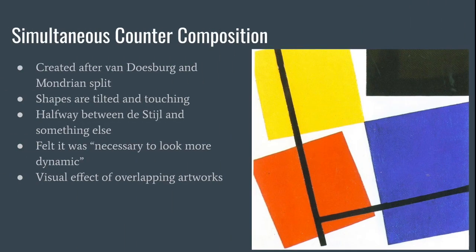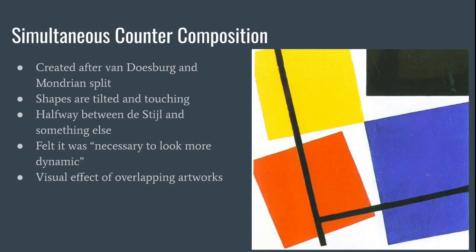This last piece is called Simultaneous Counter Composition, created by Theo after a split with Mondrian in 1924, which led to a small but crucial difference in the way he thought about his paintings. The piece no longer has only spaced-out squares and rectangles, but it still uses the primary colors. It has only four squares, and two of them are touching only at the corners — in earlier pieces he usually keeps all shapes from touching unless separated by a black outline. The piece is a halfway point between De Stijl and something else, as Van Doesburg disregards the horizontal and vertical aspects of De Stijl but keeps the colors and geometrical feel. He accomplishes a more dynamic look by adding two black lines that intersect each other while overlapping everything else, and by using the edge of the canvas to crop the squares, creating a visual effect that makes it look like two separate pieces of artwork that are simultaneous and overlapping to become one.